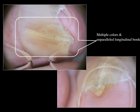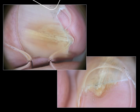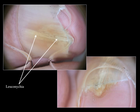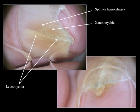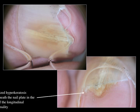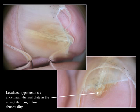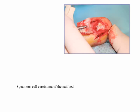And here are my comments. Looking at the nail plate dermoscopy, you can see multiple colours and very non-parallel edges of the lesion. You can see a white longitudinal pigmentation called leuconychia, a yellowish longitudinal pigmentation called xanthonychia, and very subtle signs of sub-ungual haemorrhages called splinter haemorrhages. Looking at the distal border, you can see localized hyperkeratosis underneath the nail plate, exactly in the region where the pigmentation trouble is visible. So this was a squamous cell carcinoma of the nail bed, and this is a surgical view.